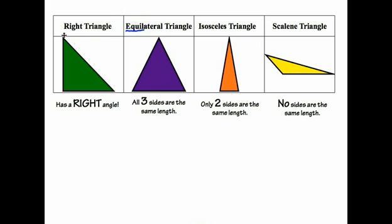Again, we have the right triangle, meaning there is a right angle somewhere in that triangle — we saw that right angle in the left corner. The equilateral triangle means all three sides are the same length. The isosceles triangle means only two sides are the same length. And the scalene triangle shows us that all three sides are a different length. You can see I used some ticks here to show the different sides, and we'll learn more about that later in this video.